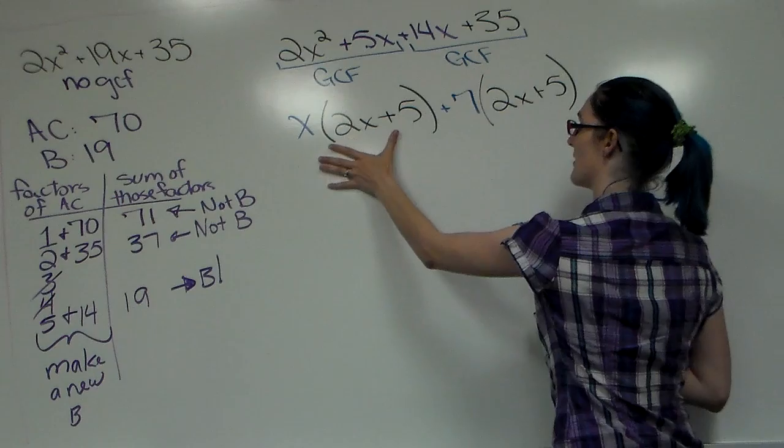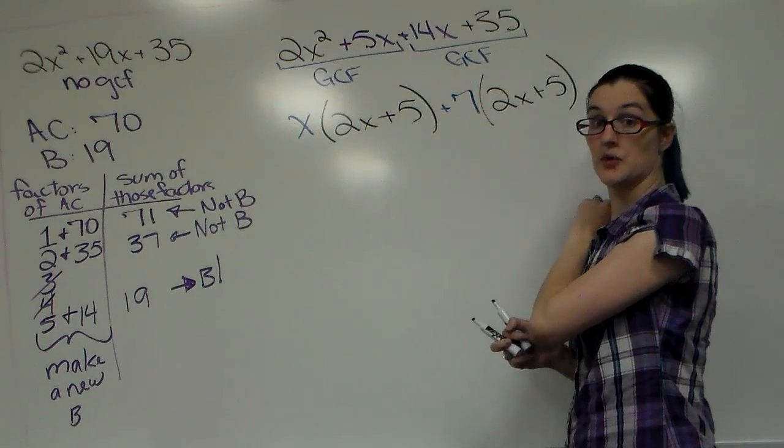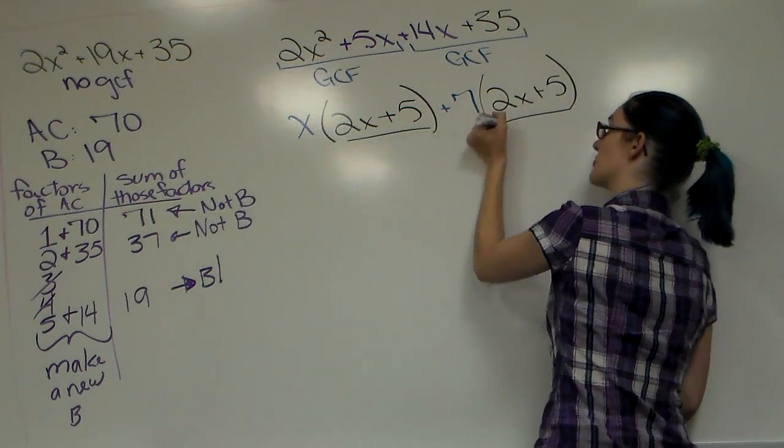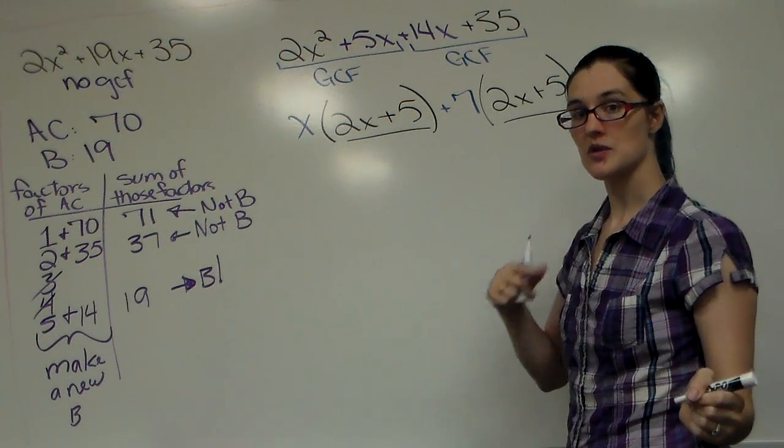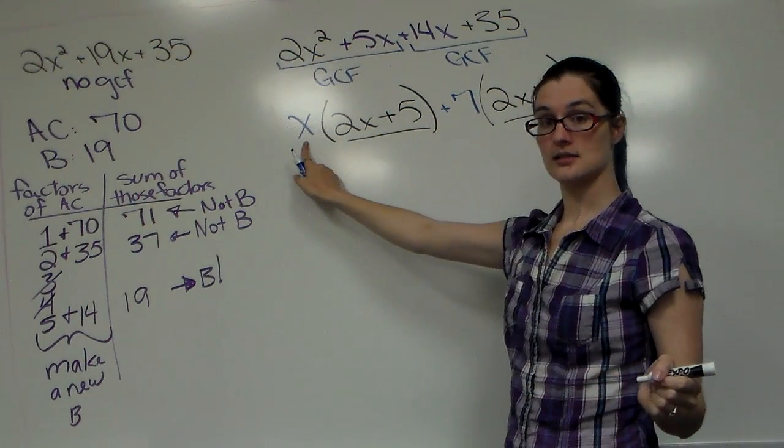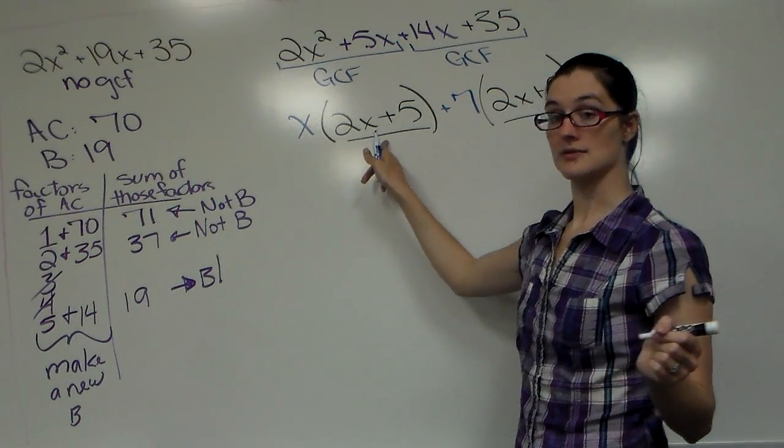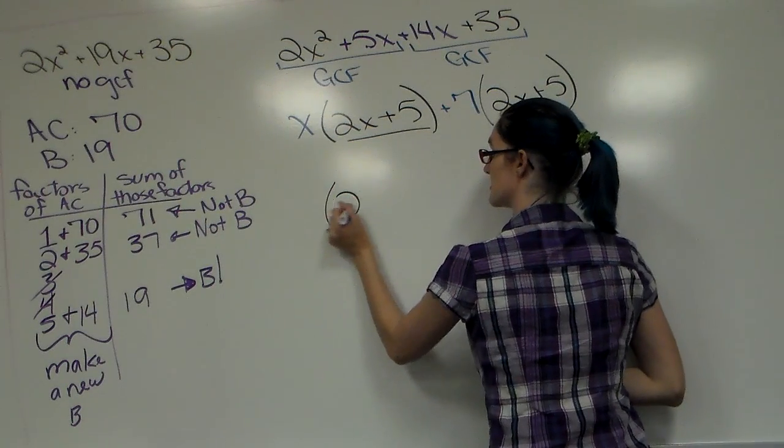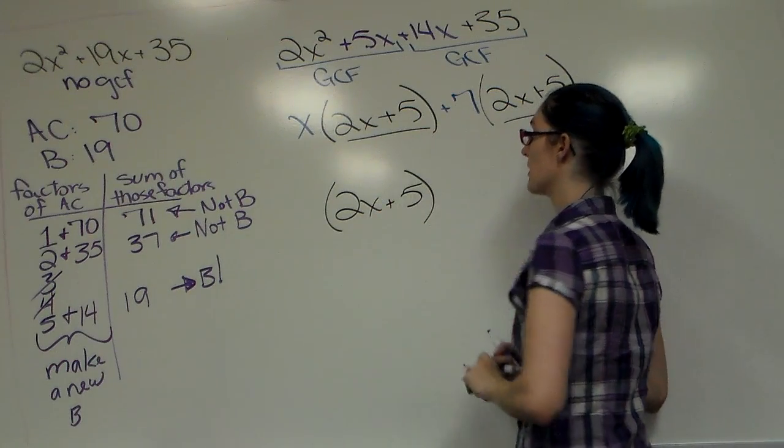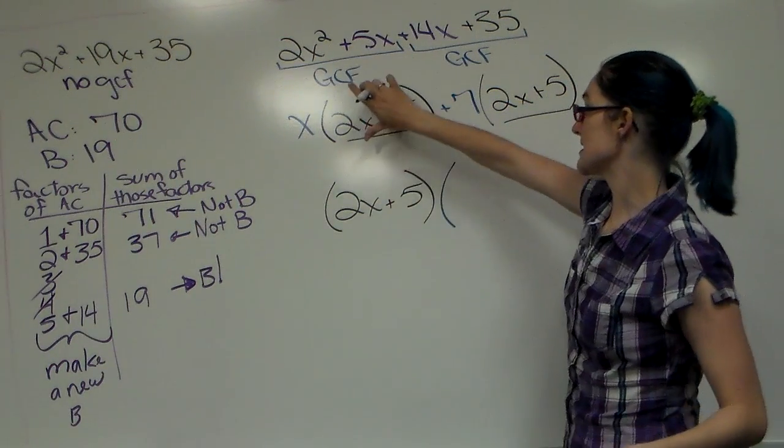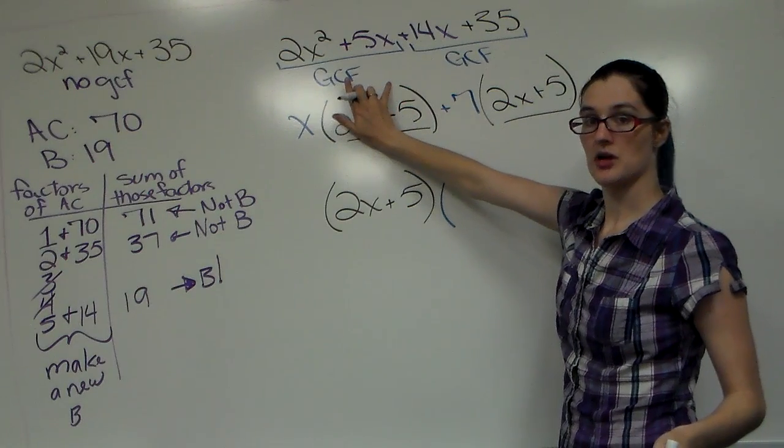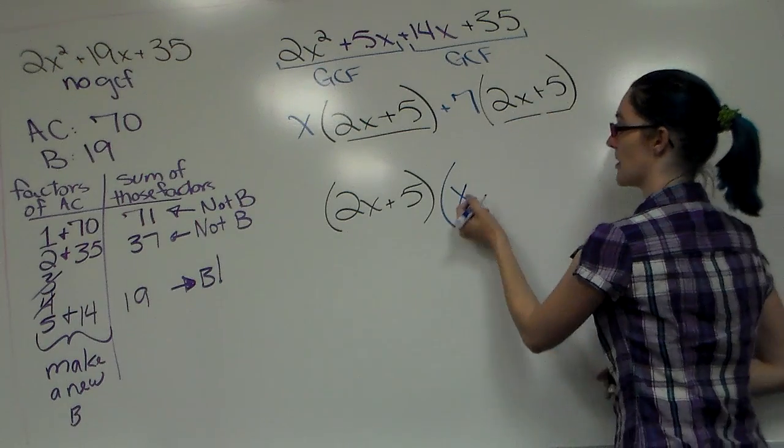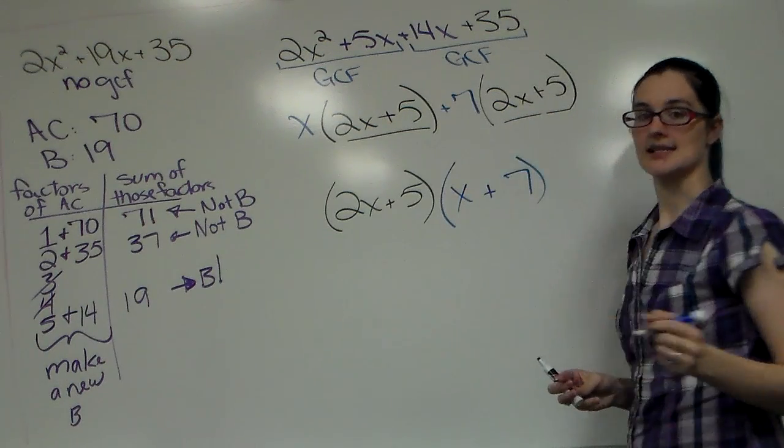Now we have this plus this, we're going to GCF one more time. Now GCF here is just our parentheses. Anytime we took the GCF, we wrote it once, open parentheses, and wrote what was left over. Our GCF is the parentheses, we're going to write it once. We're going to open parentheses. If I take this away from that term, all that's left is an x. If I take it away from this term, all that's left is a plus 7.